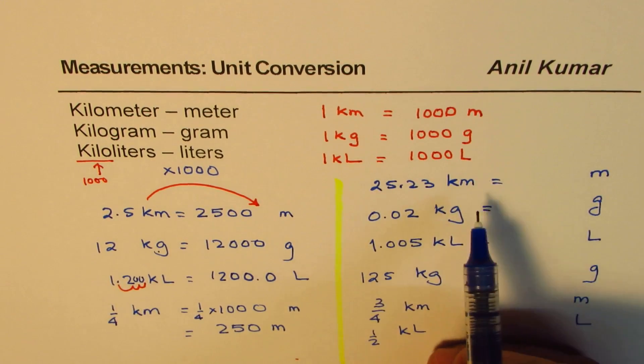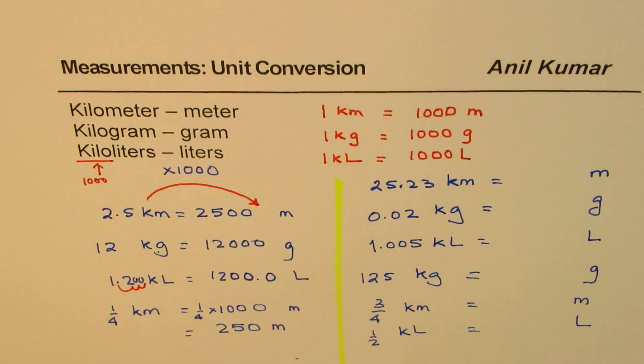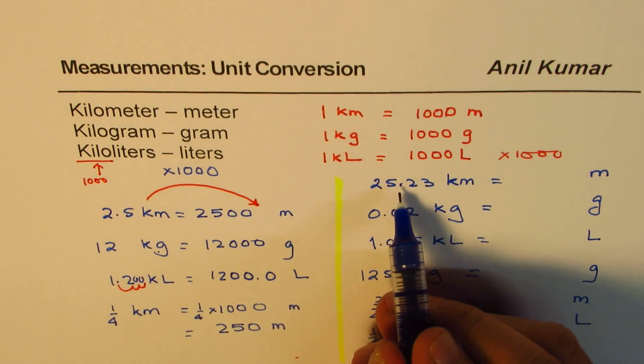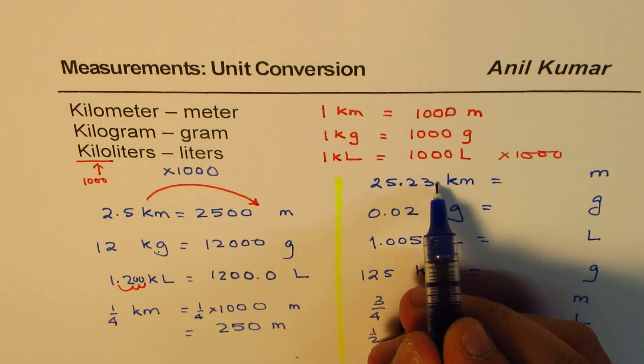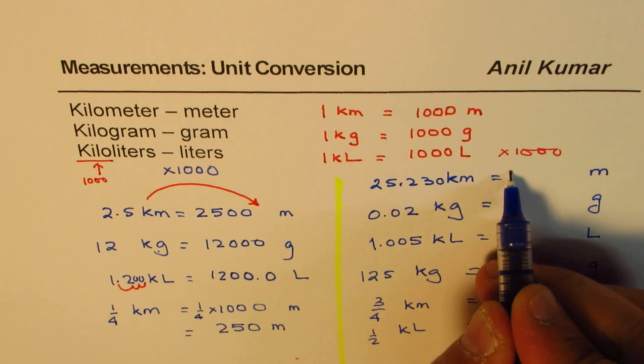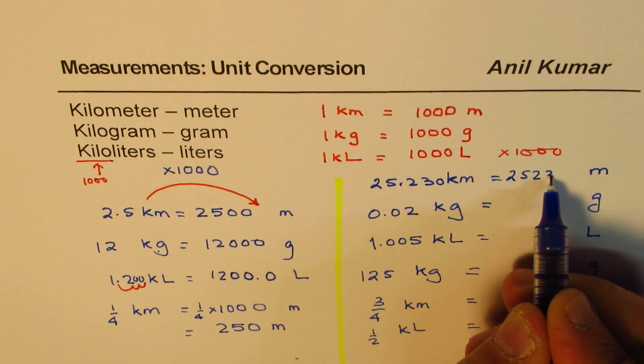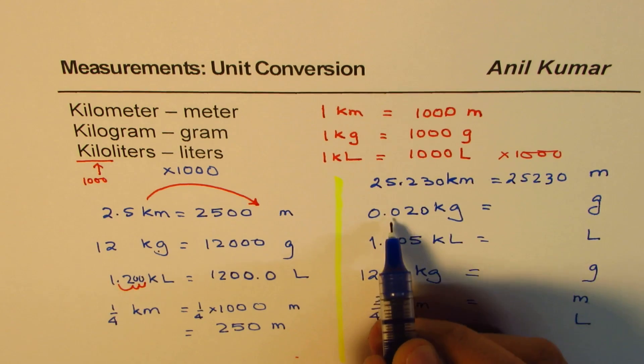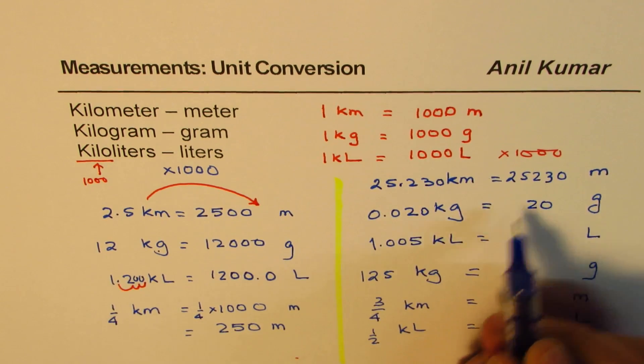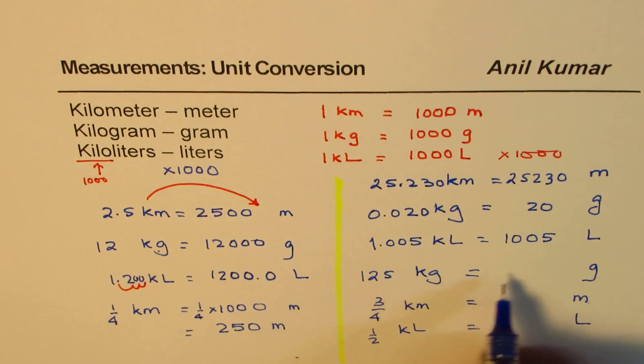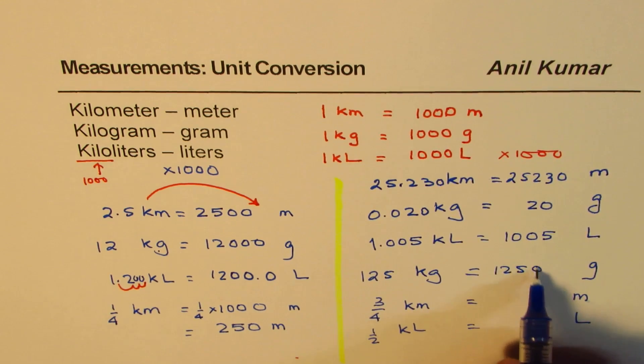Here are the solutions. You have to only multiply by 1,000. So you have to do times 1,000 to get your answers. So the first one, 1, 2, 3 places means you need to introduce one more 0. So that should be 25,230. Is that okay? Now here, you think about a 0 here. Move it 1, 2, 3. You get 20 grams. In this case, 1,005 liters. Here, 125,000 grams.